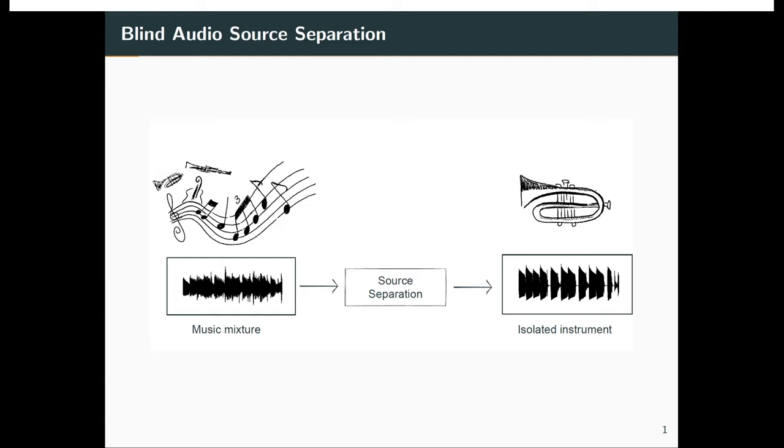Moreover it is still hard for them to generalize to unseen data with significant timbral variation compared to training, and high quality music source separation remains still an open problem for most instruments and music genres. To improve a source separation system performance one can inform it with additional knowledge about test data, for instance the score, the lyrics, visual cues and many others.